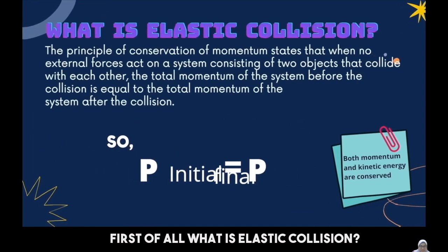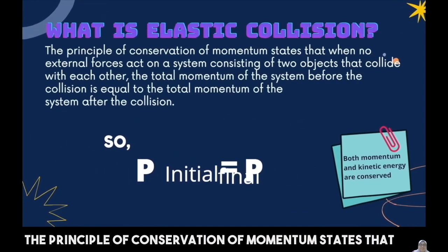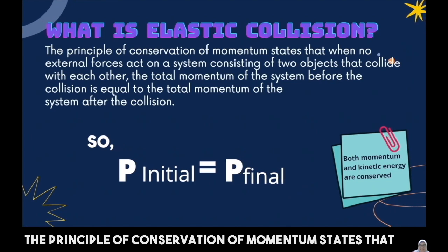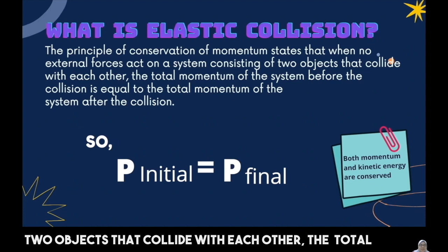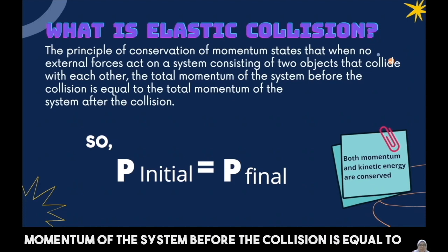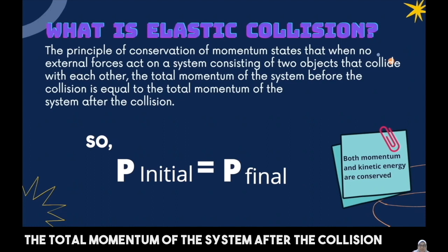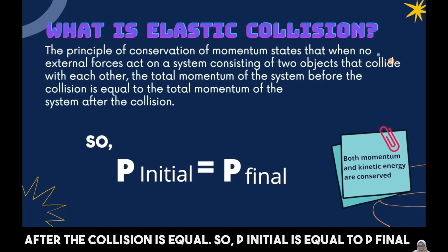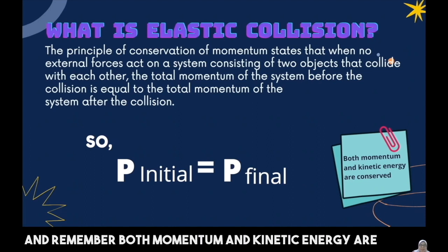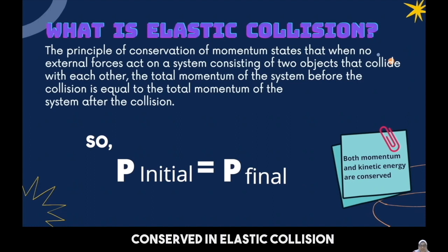First of all, what is elastic collision? The principle of conservation of momentum states that when no external forces act on a system consisting of two objects that collide with each other, the total momentum of the system before the collision is equal to the total momentum after the collision. So P_initial is equal to P_final. Remember, both momentum and kinetic energy are conserved in elastic collision.